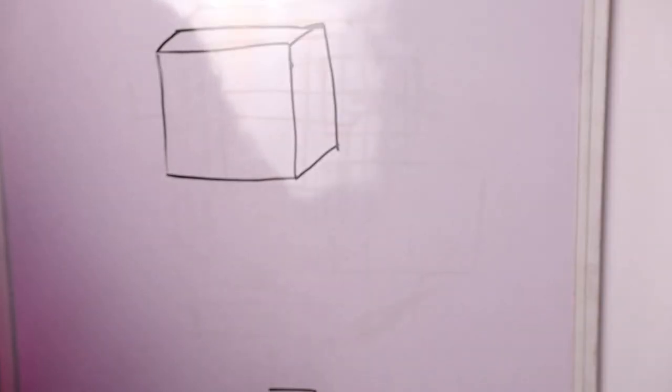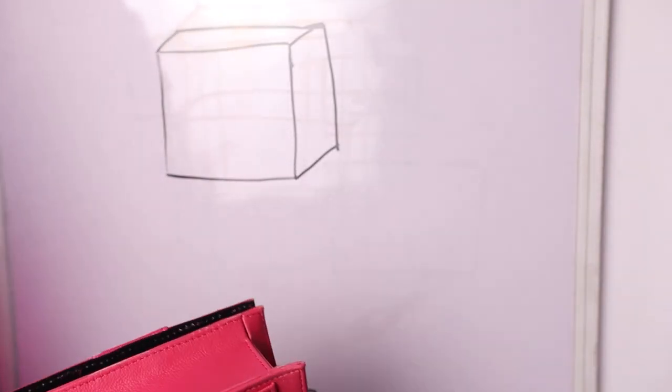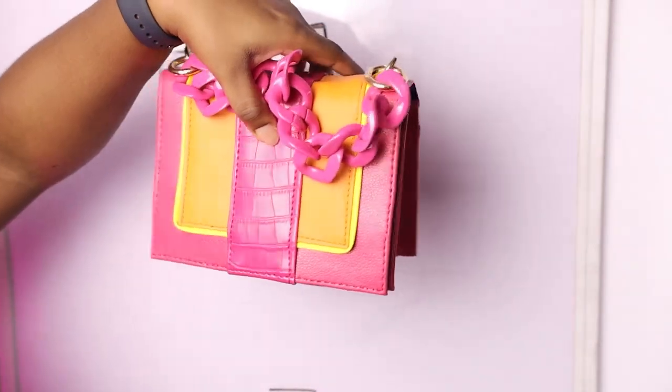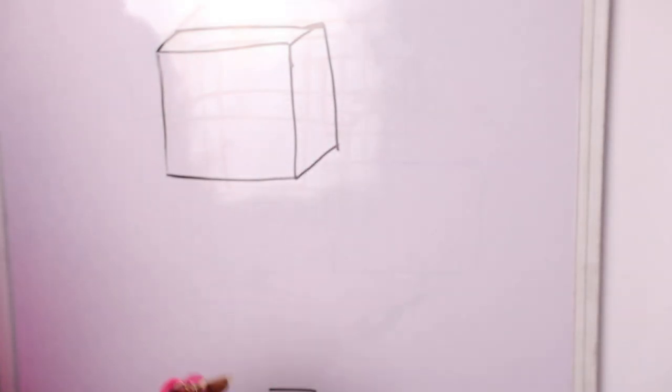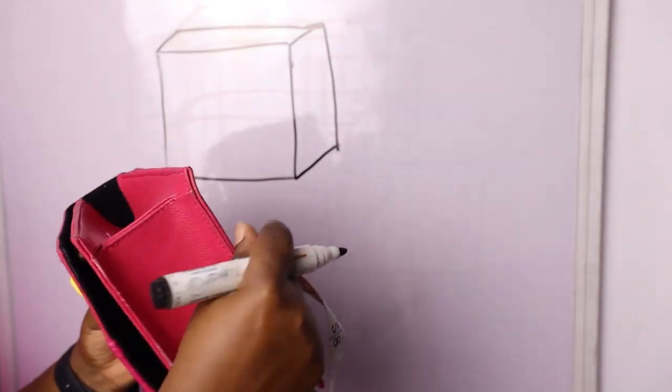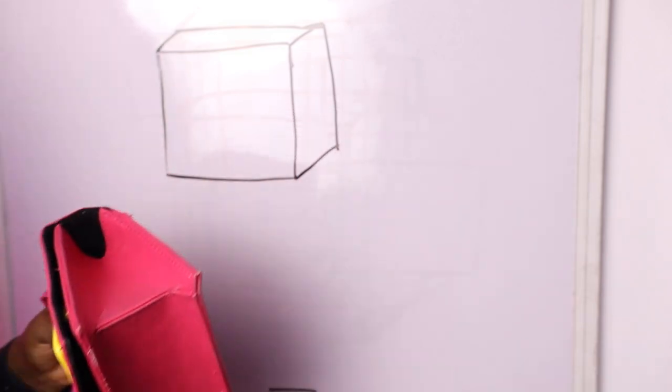So today I'm going to address how I actually come up with the dimensions for my three-piece gusset. This is one bag I made recently. It's the one where you have the side, the bottom, and the other side, and you sort of join three pieces. Then you join into your front and back piece. For reference, this is also a three-piece. You see when you look at it from the side, you see the way it sort of dips in.